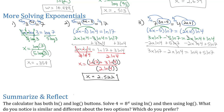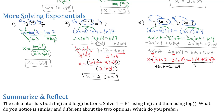Now that we've got the variable all on one side, we've got an x in both of those terms — that's a common factor of x that I can factor out, leaving x times the quantity 3 natural log of 7 minus 2 natural log of 4 in parentheses, equals the natural log of 4 plus 5 natural log of 7. Now that we've got x times this big ugly parentheses, we can get rid of it by dividing both sides by 3 natural log of 7 minus 2 natural log of 4, leaving behind x equals the natural log of 4 plus 5 natural log of 7, divided by 3 natural log of 7 minus 2 natural log of 4.